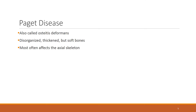Paget disease is a relatively rare disorder also known as osteitis deformans. It is a chronic metabolic disorder affecting bone formation — causing excessive resorption of spongy bone and accelerated formation of softened bone. Normally, osteoclasts and osteoblasts work together in a constant process called remodeling.